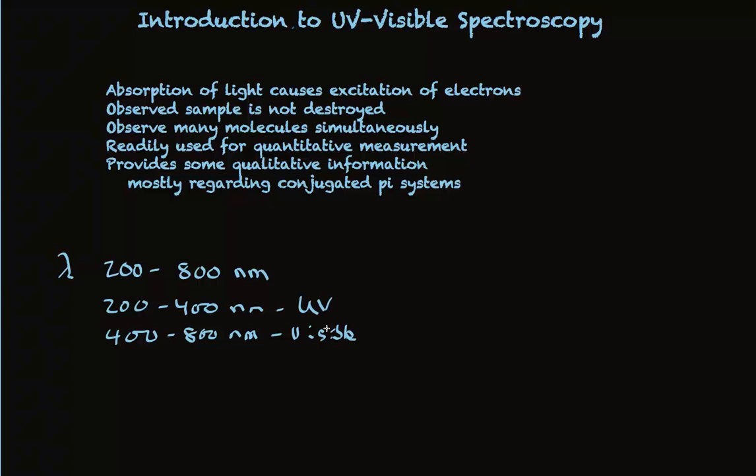Some of those conjugated pi systems absorb in the visible light — that's what causes colors — while some of them absorb in the UV light. When we learn more about the bonding in pi systems and understand MO theory of pi systems, we can talk more about this electronic excitation.